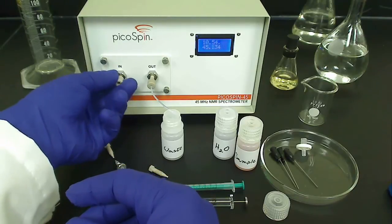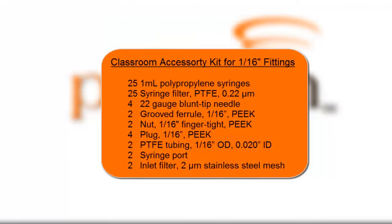Now, let's assemble our injection system from parts found in the Classroom Accessory Kit. The parts I'm using are a disposable 1 milliliter polypropylene slip tip syringe, a disposable inch and a half long blunt tip 22 gauge needle, and a syringe port.